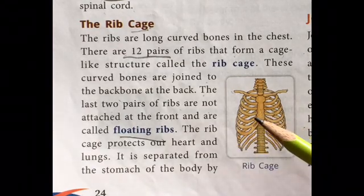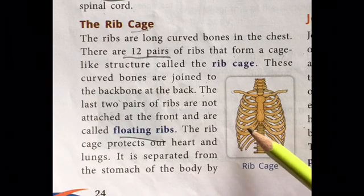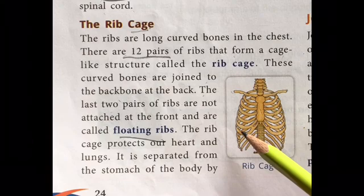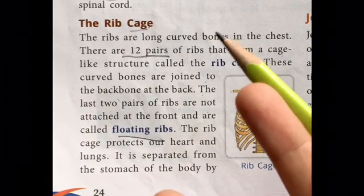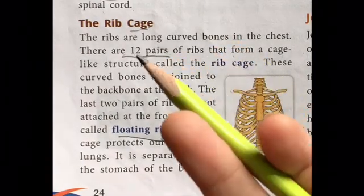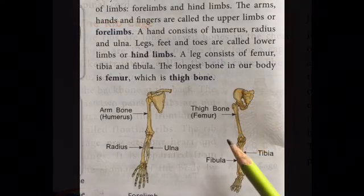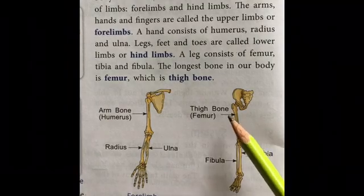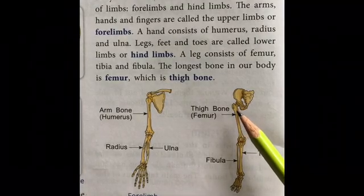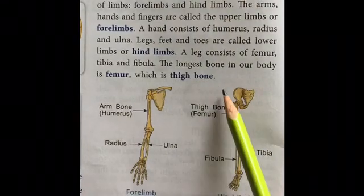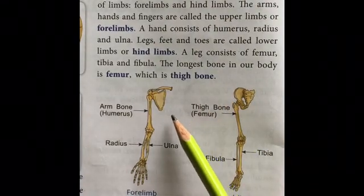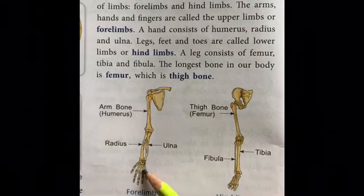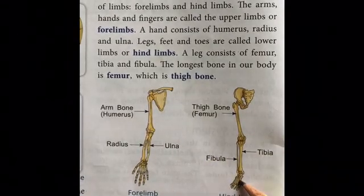The ribs protect our heart, lungs, and diaphragm. Our diaphragm and lungs expand inside the ribcage. After the skull, backbone, and ribcage, the next important bones in our body are the limbs — that means the bones of our legs and hands. You can see the arm bones and the leg bones in the diagram.